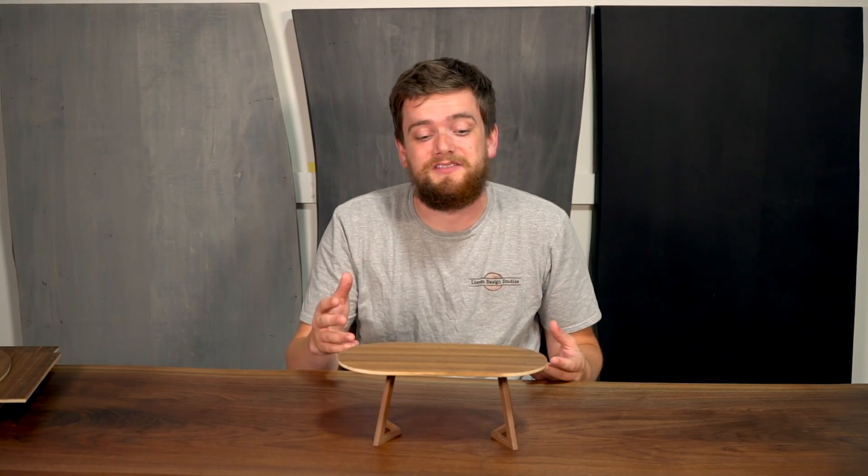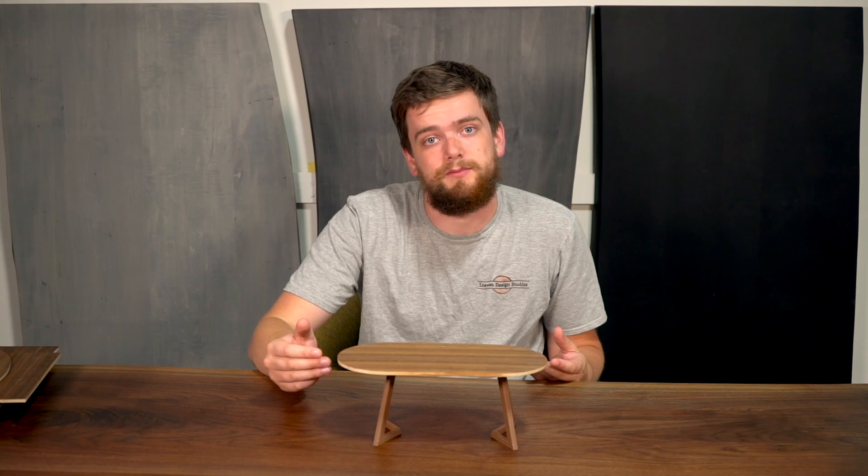Hi, my name is Josh Lowen, and I have a scale model of a 36-inch by 72-inch racetrack oval dining table.